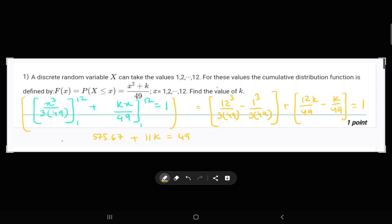After this, we can write it as 11k equals to -526.67. And finally, k would be -526.67/11, which will be equal to -47.878.